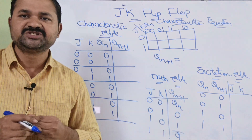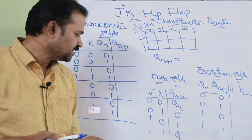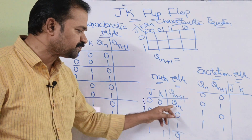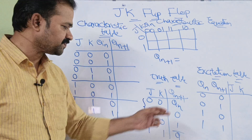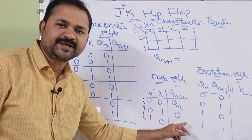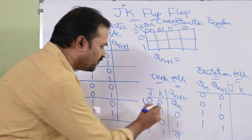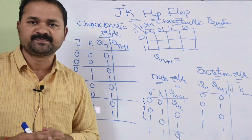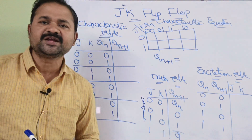The JK flip-flop accepts two inputs J and K and it produces Qn+1, which is the next state output. The first three combinations are similar to SR flip-flop only. If the inputs are 0,0 then the next state output is the current state output — there is no change. If the input is 0,1 then the output is 0, which means reset. Here J means set and K means reset. If the input is 0,1 then we will get 0 as the output. Next, if the input is 1,0 that means set.